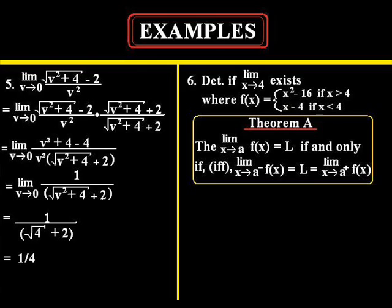Now in order to do this we need to look at theorem A which states the limit as x approaches a of f of x is equal to L if and only if the limit as x approaches a from the left of f of x and the limit as x approaches a from the right of f of x are both equal to L.